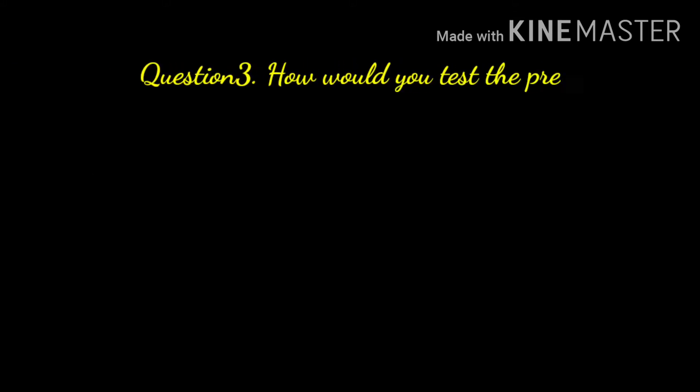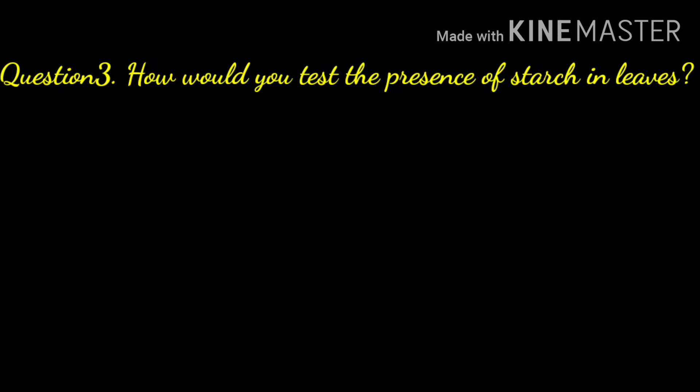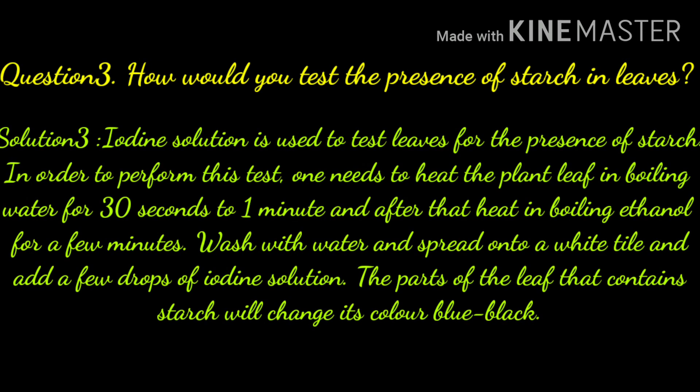Our next question is: how would you test the presence of starch in leaves? Answer: iodine solution is used to test leaves for the presence of starch. To perform this test, heat the plant leaf in boiling water for 30 seconds to one minute, then heat in boiling ethanol for a few minutes, wash with water, spread onto a white tile, and add a few drops of iodine solution. Parts of the leaf that contain starch will change color to blue-black.